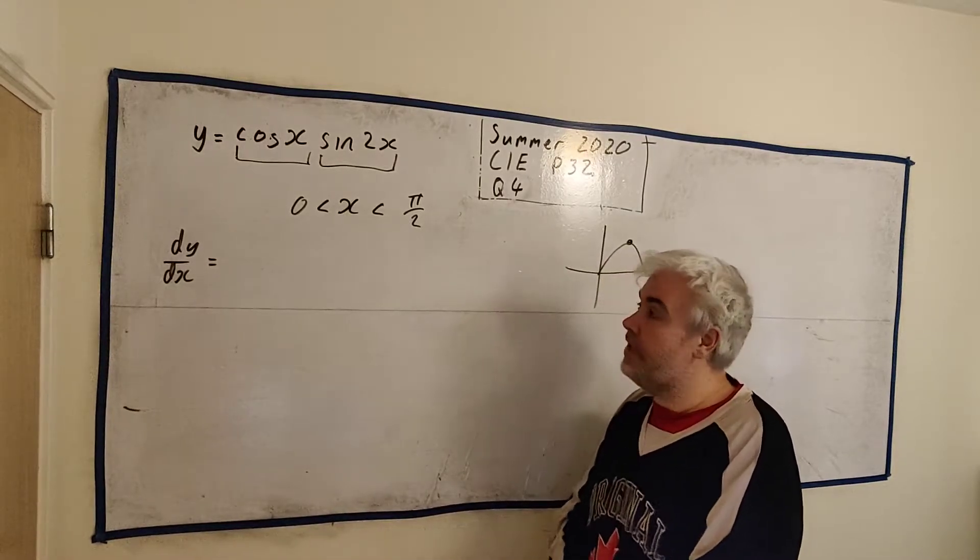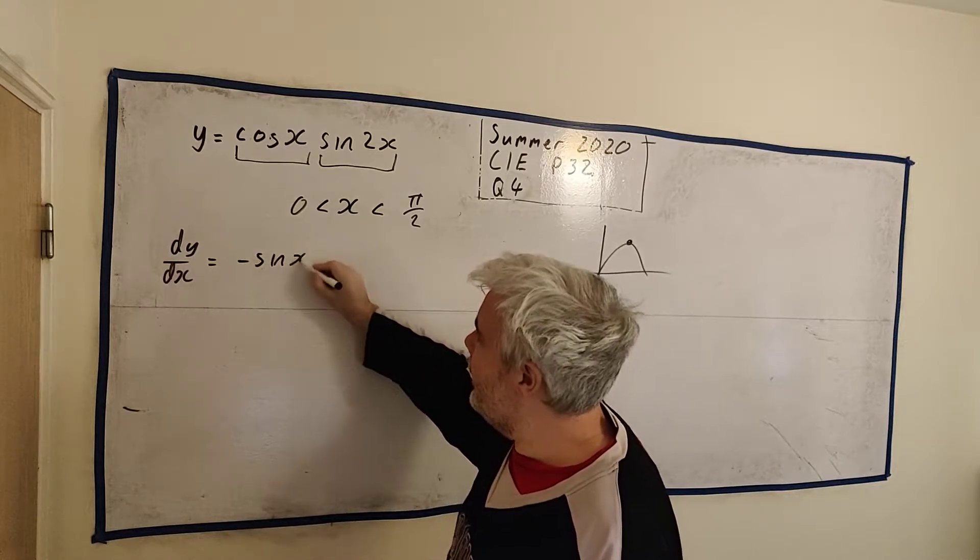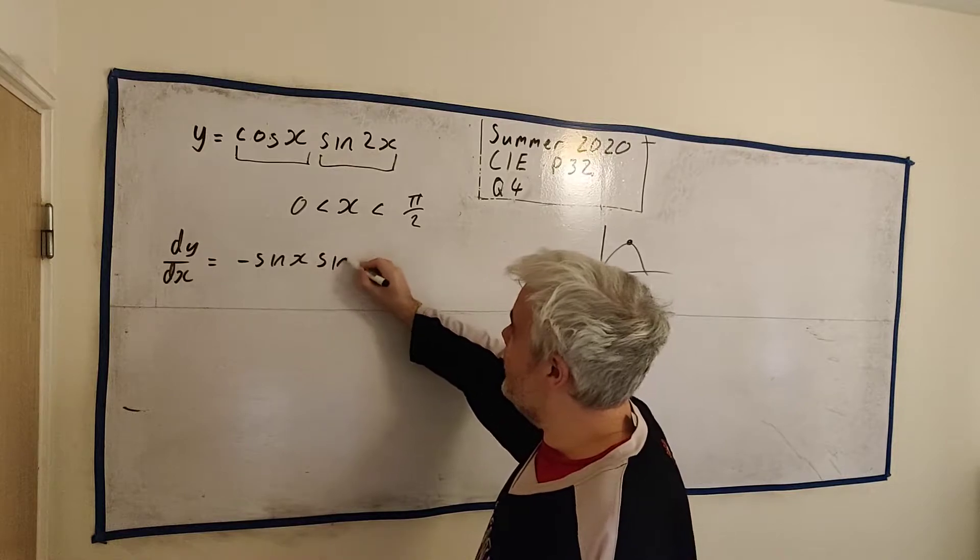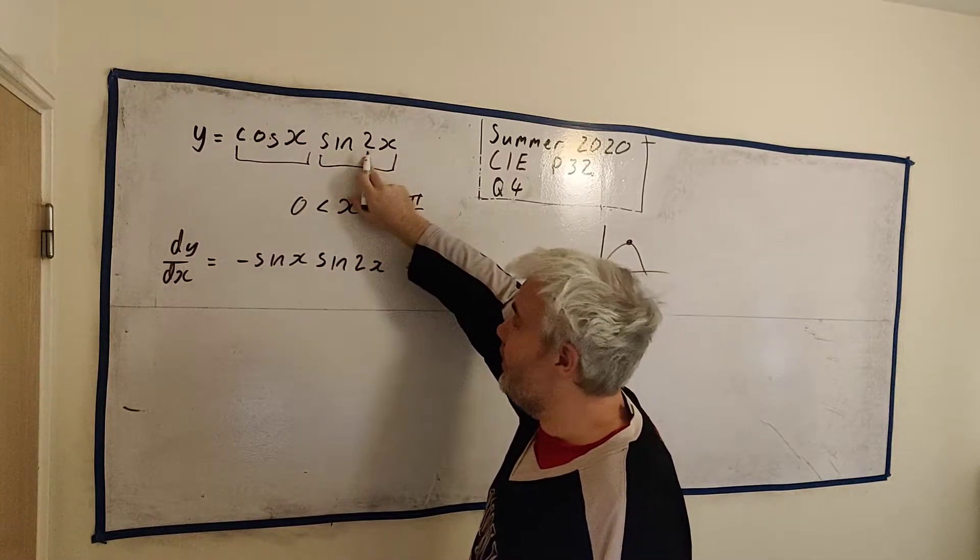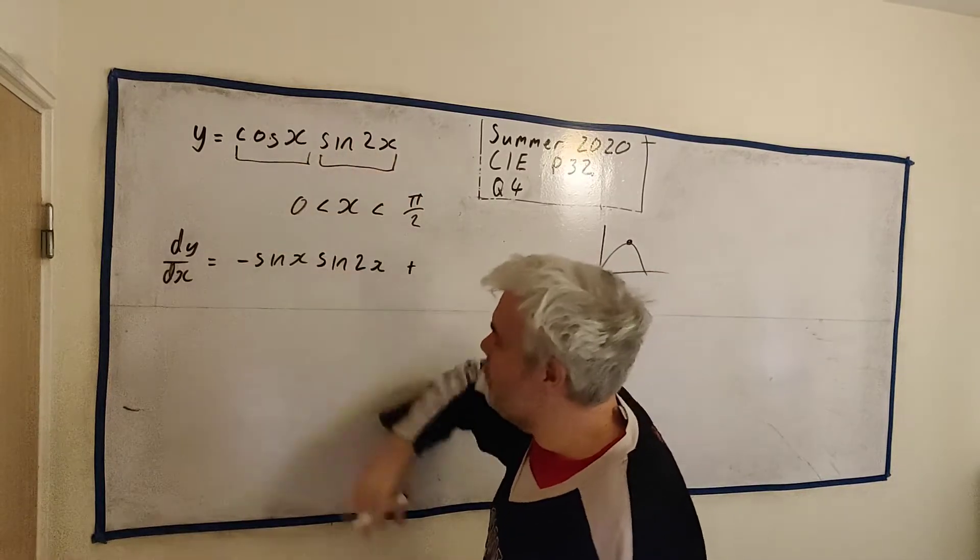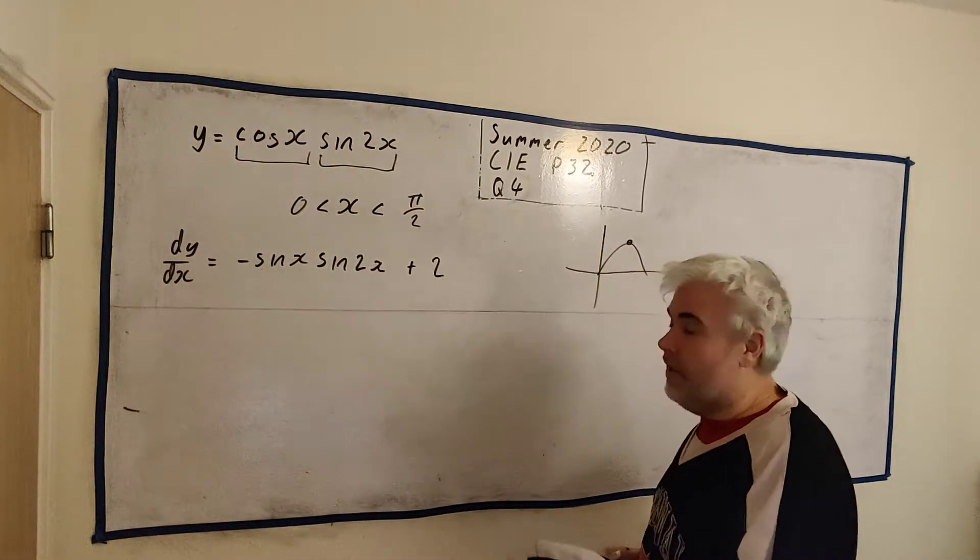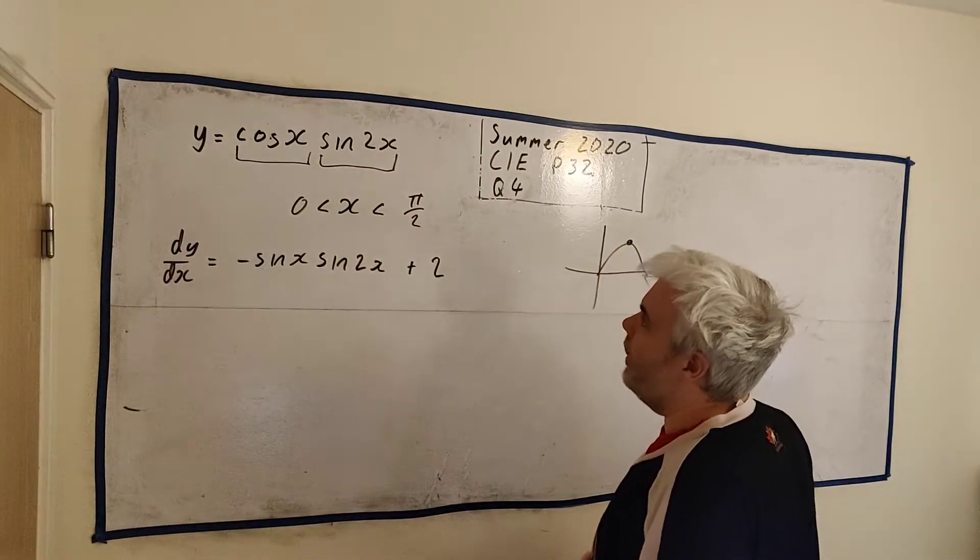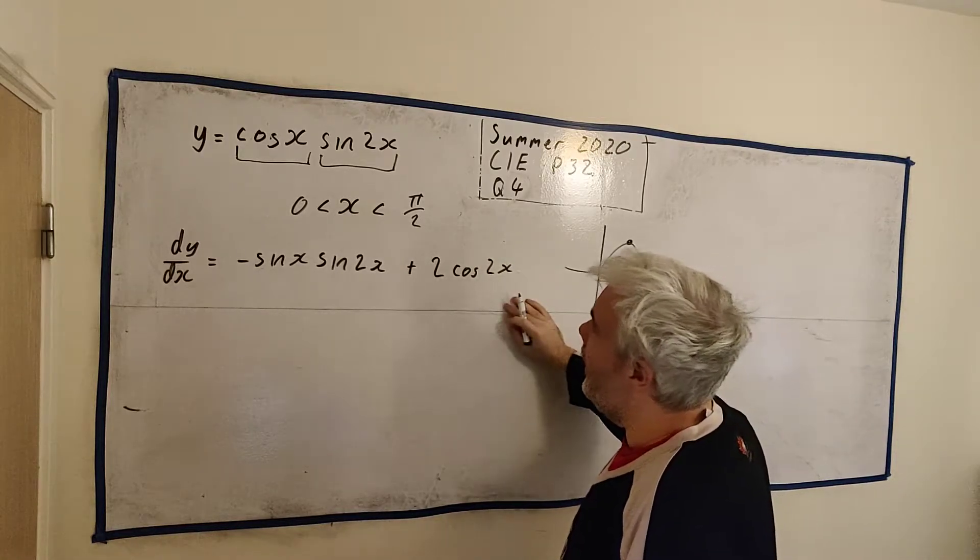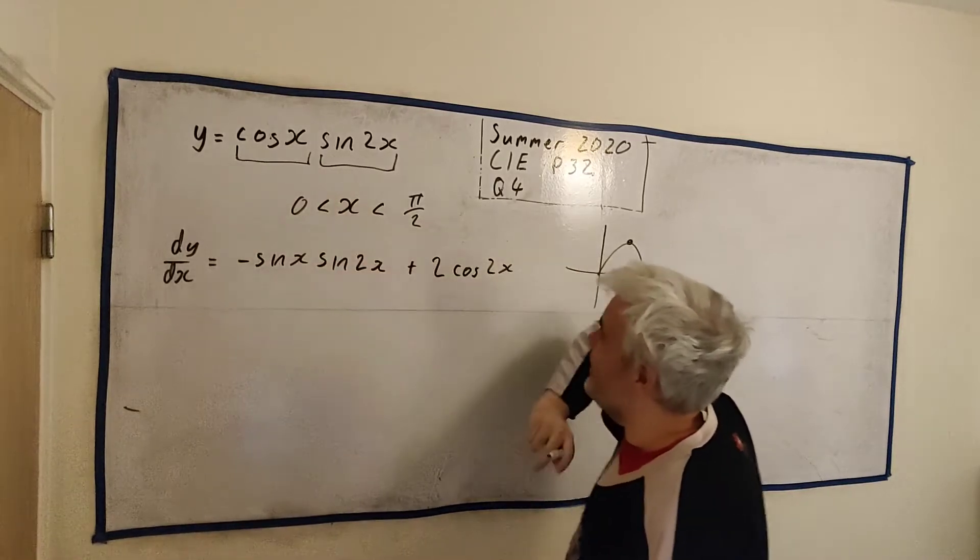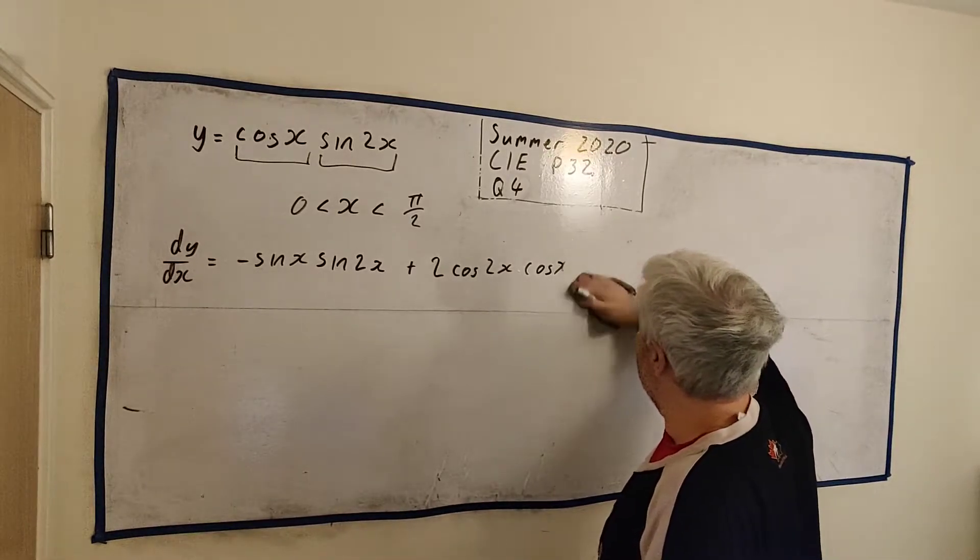The product rule tells us we differentiate one of them, let's differentiate the first one. The derivative of cosine is minus sine x. We leave the other one alone, sine 2x. And then we add on, we do the opposite, we differentiate the one we didn't do first and leave the other one alone. So let's differentiate sine 2x. We'll get the 2 will come out because we have to use the chain rule now. Then we'll differentiate sine 2x, which will become cosine 2x. And then we multiply by this left alone, which is cosine x.